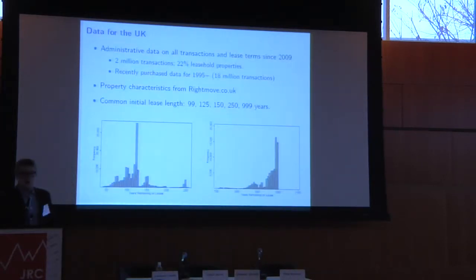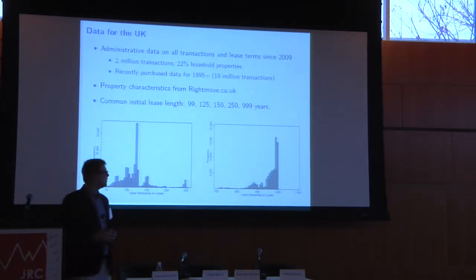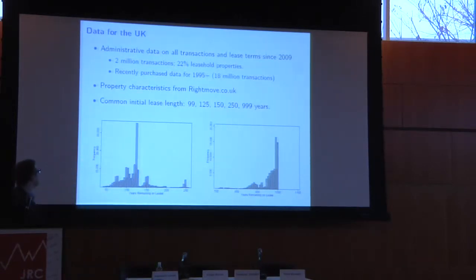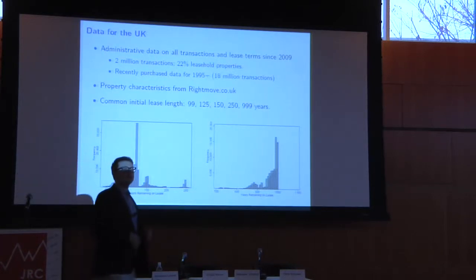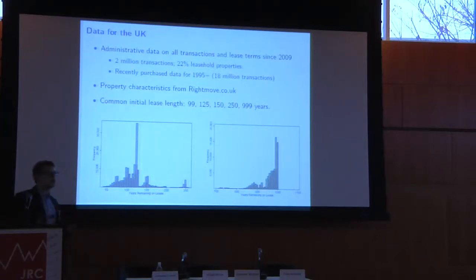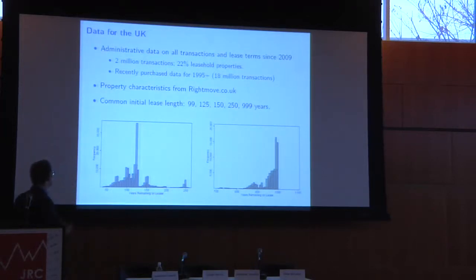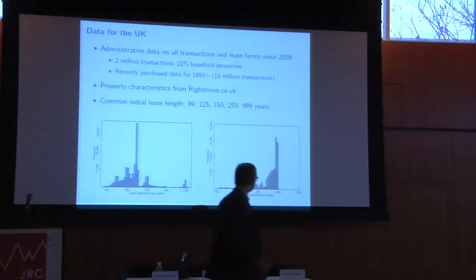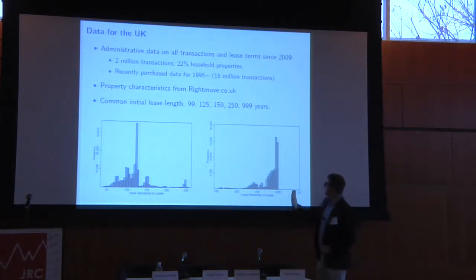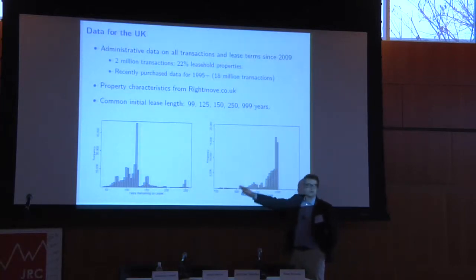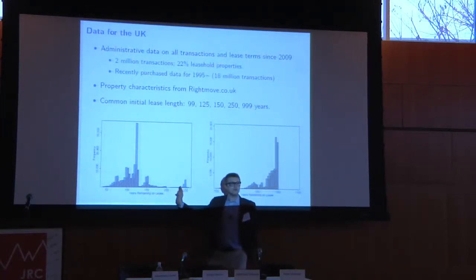Regarding the data: we're using administrative data on all leasehold transactions and lease terms in the UK since 2009, giving about 2 million transactions, of which about a quarter are leasehold properties. We recently purchased data back to 1995 to examine the time series of these discount rates. Property characteristics come from Rightmove, basically the Zillow of the UK. The graphs here show the distribution of remaining lease lengths at the point of transaction — initial 999-year leases with remaining lengths up to 800 years, and transactions with lease lengths between 70 and 250 years.